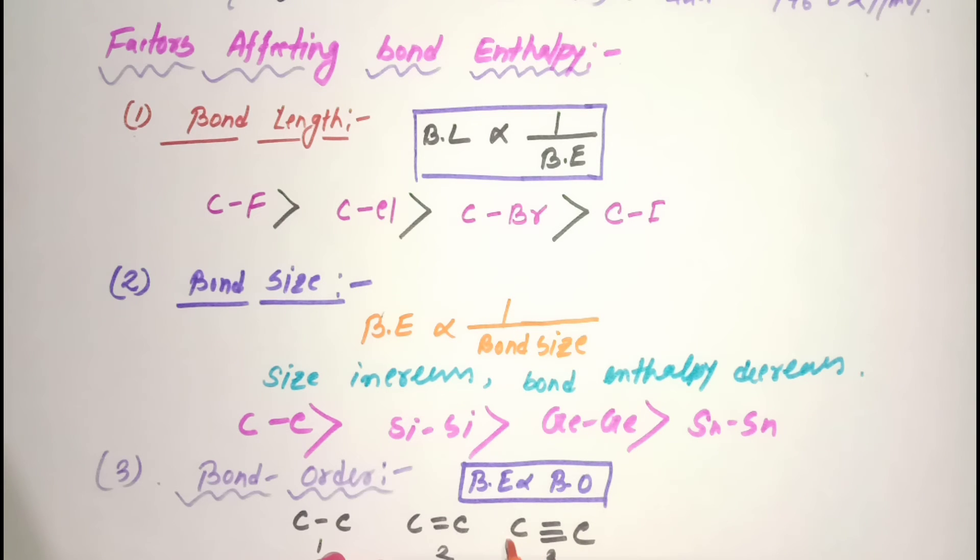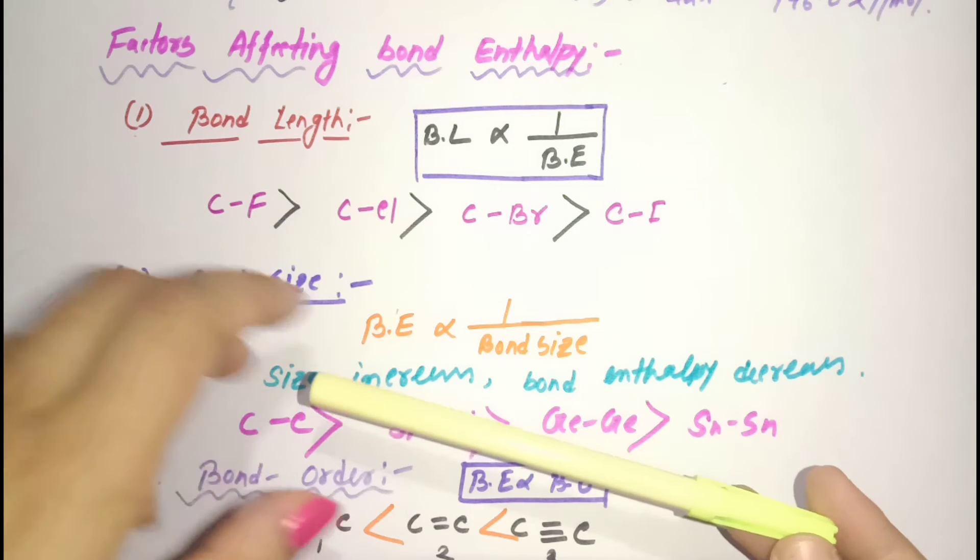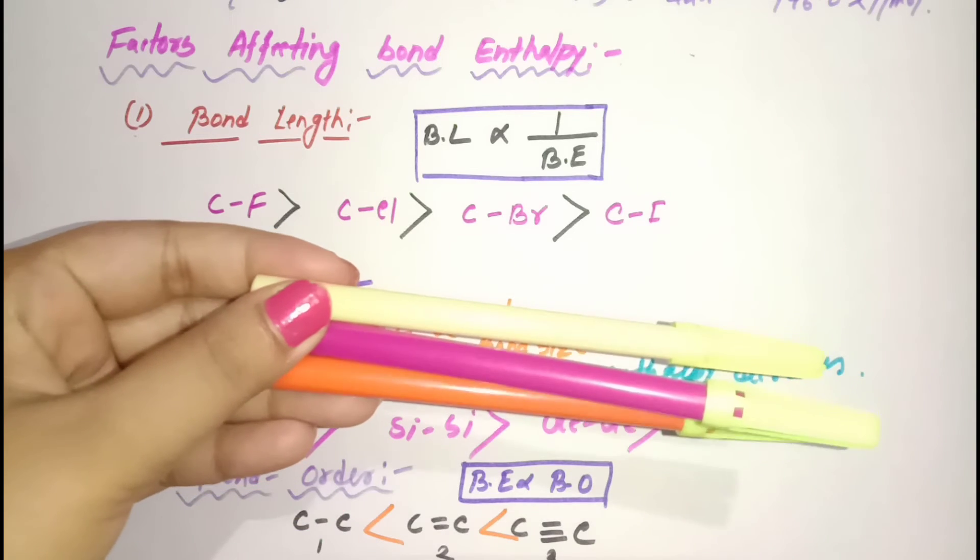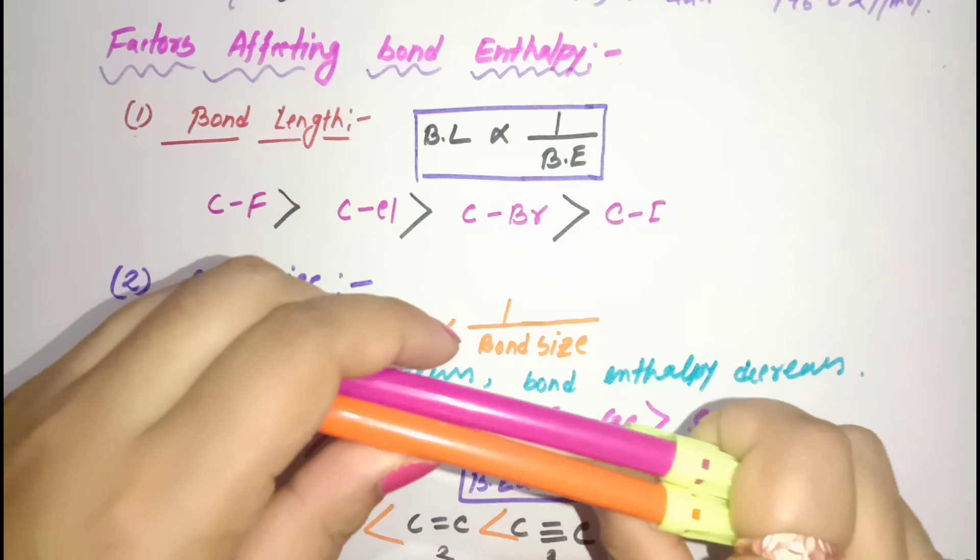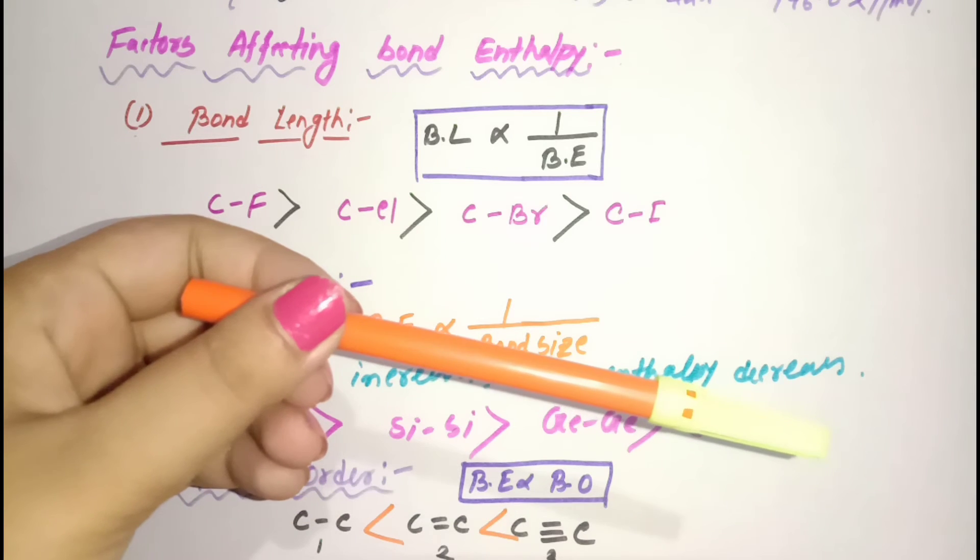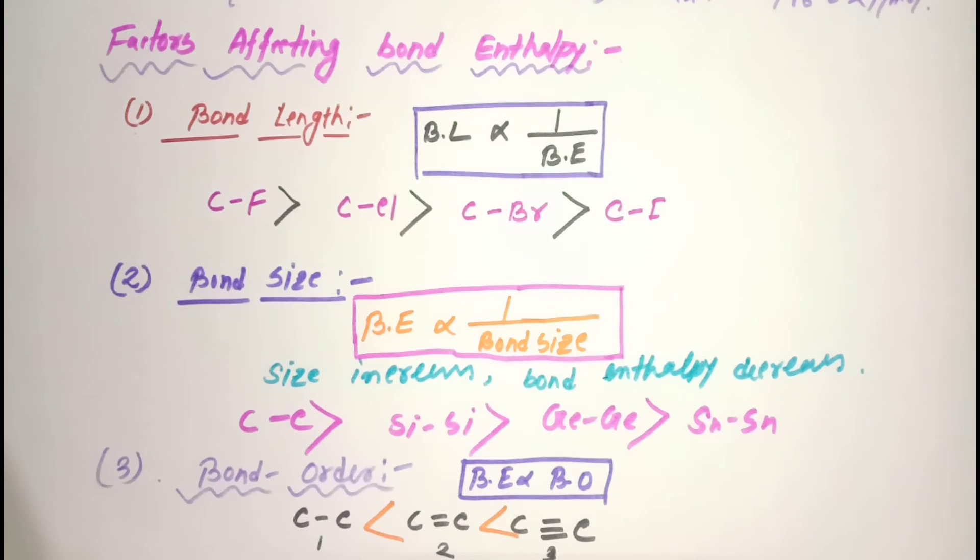As bond order increases, bond enthalpy increases. This is the increasing order of bond enthalpy: single bond has lowest energy, then double bond, then triple bond has highest. To break three bonds requires more energy compared to breaking only one bond. The larger the bond dissociation enthalpy, the stronger will be the bond in the molecule.